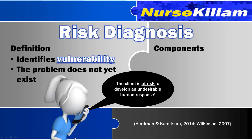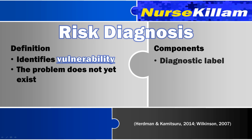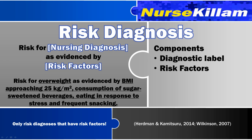NANDA also uses risk diagnoses as one of the three categories of nursing diagnoses. Like the name suggests, a risk diagnosis identifies an area where the client is vulnerable to develop a problem. If a client is at risk for a problem, it means there is not enough evidence to say that the problem exists — otherwise it would become a problem focused or actual diagnosis. A risk diagnosis may not yet exist, but if no interventions are initiated, it is likely to develop. You may also see some other textbooks call this a potential diagnosis. Since the problem does not yet exist, risk diagnoses are identified by risk factors, not defining characteristics. You can still use the label and etiology format; however, the etiology is replaced by the risk factors.